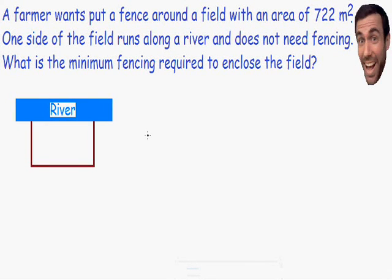Welcome to my video on optimization. In this example we have a farmer, and the farmer wants to put a fence around a field. This field has an area of 722 meters squared. We also know that one side of the field runs along a river and does not need fencing. The question is, what is the minimum fencing required to enclose the field?